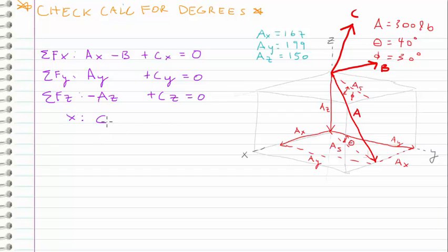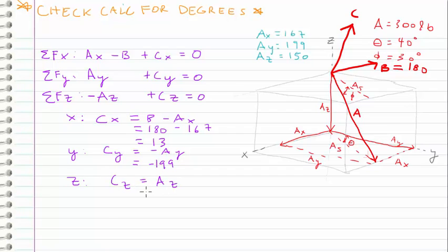After that, we plug and chug, rearrange the first equation in the X direction. CX equals B minus AX, which is equal to 180 minus our 167. We're left with 13. In the Y direction, we have CY equals negative AY, so our Y component of our unknown vector is negative 199. And lastly, for the Z direction, CZ equals AZ, just 150.